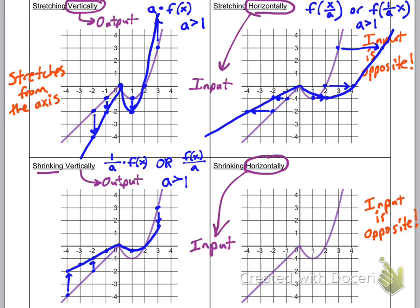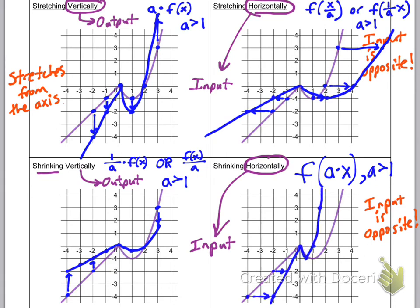Horizontal shrink is an input change, so we affect inside the parentheses. And remember, input is the opposite — so if you think shrinking means dividing, it's actually the opposite: we multiply. So a times x goes inside the parentheses. When you do this, all the x values get closer to the y-axis. For example with a equal to two, an x value of negative four becomes negative two, and the x value of three becomes one and a half. You can see it getting closer to the y-axis.